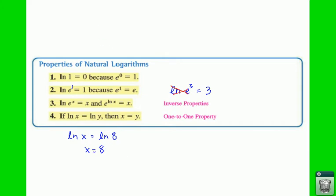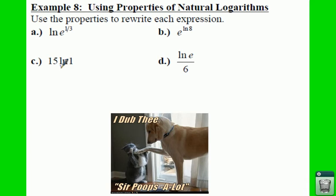So if we go to example 8, for a here, we're going to rewrite each expression. This natural log and this base e just cancel out and you end up just getting the answer of 1 third.